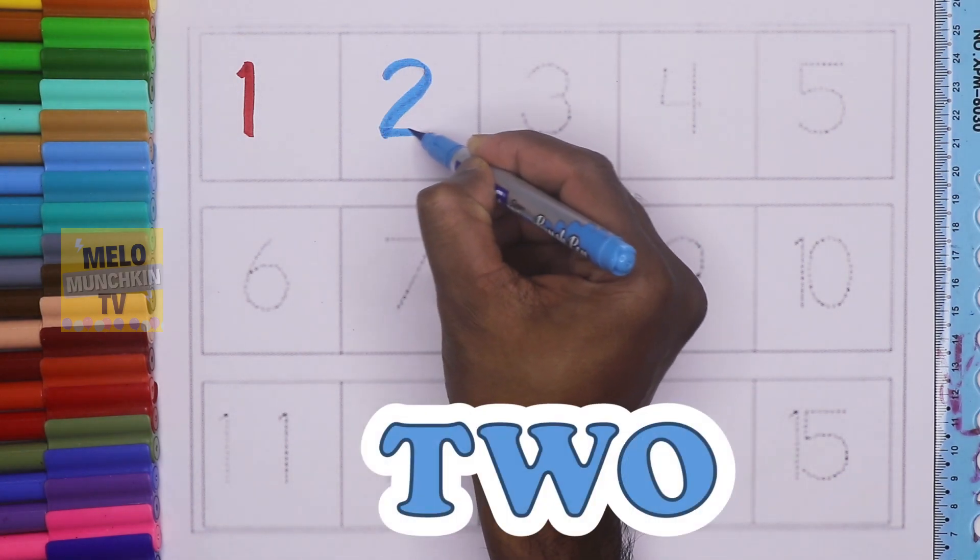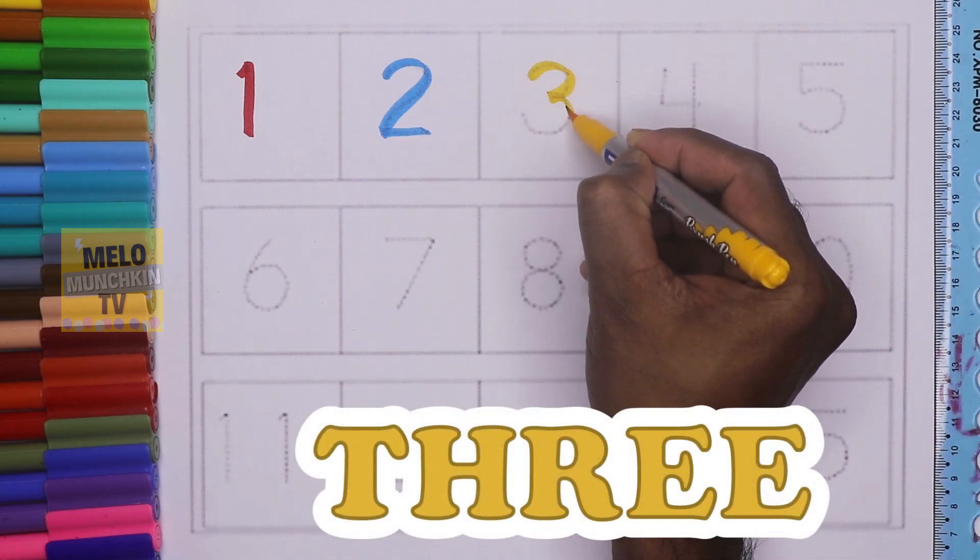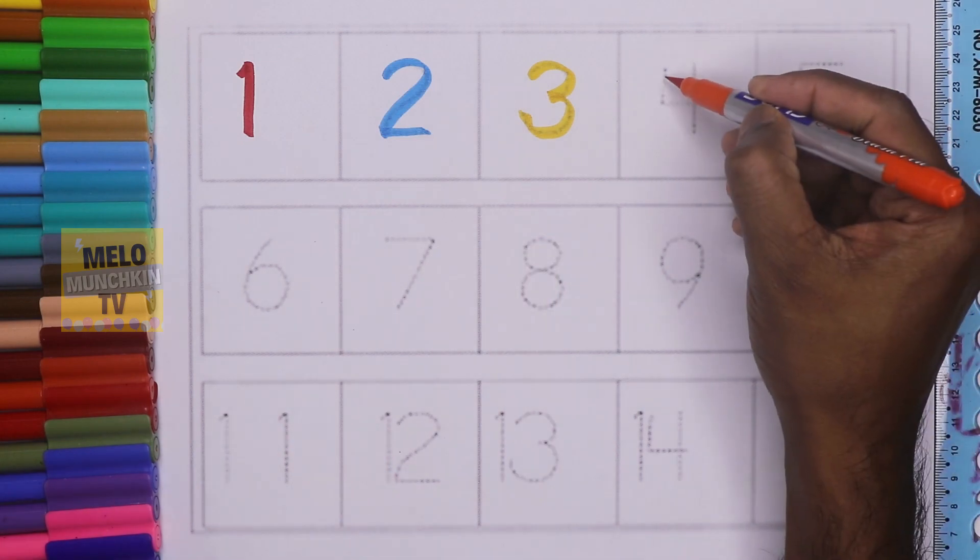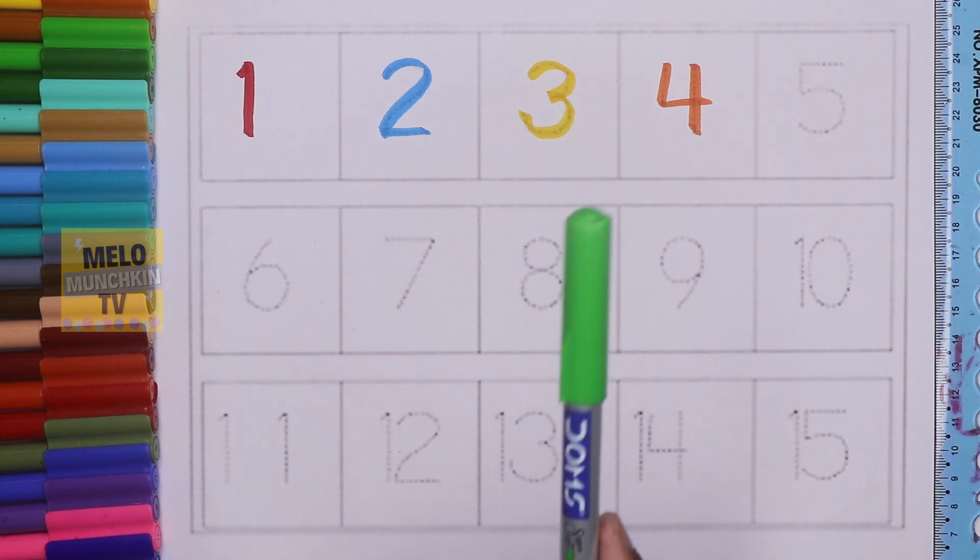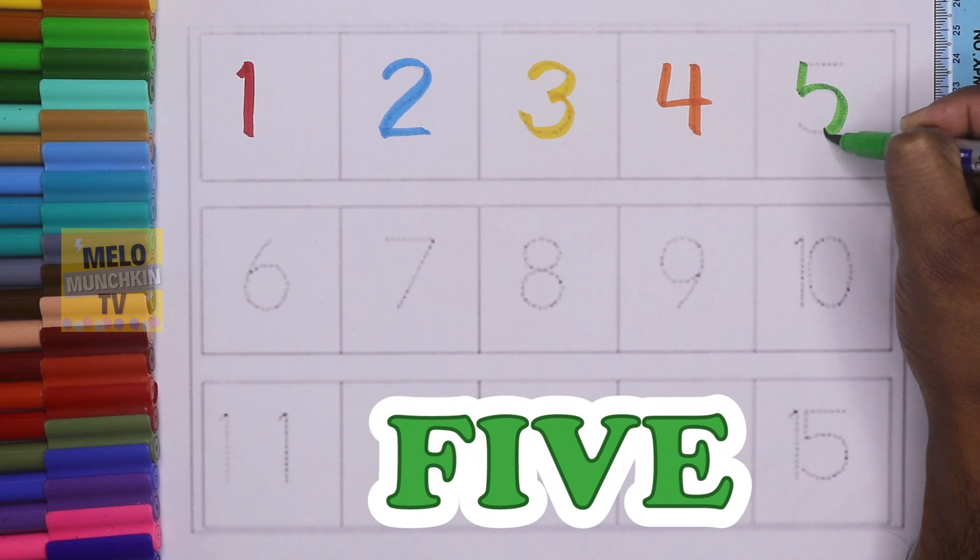two: T-W-O, 2. Yellow color, this is number three: T-H-R-E-E, 3. Orange color, this is number four: F-O-U-R, 4. Light green color, this is number five: F-I-V-E, 5.